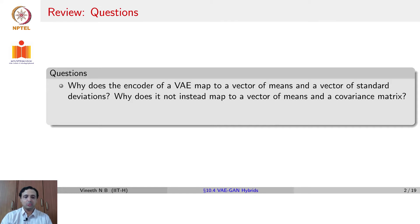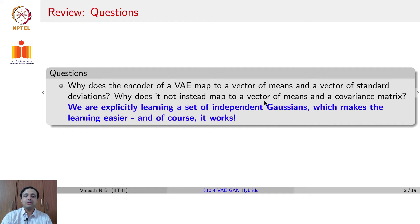One of the questions was: why does the encoder of a VAE map to a vector of means and a vector of standard deviations? Why does it not map to a vector of means and an entire covariance matrix? By design, we are explicitly learning a set of independent Gaussians. That is the reason you only need standard deviations per each dimension of the Gaussian.